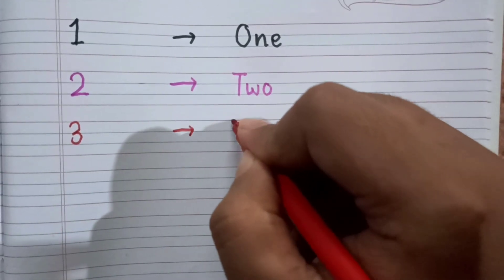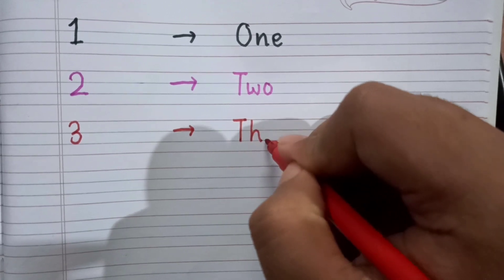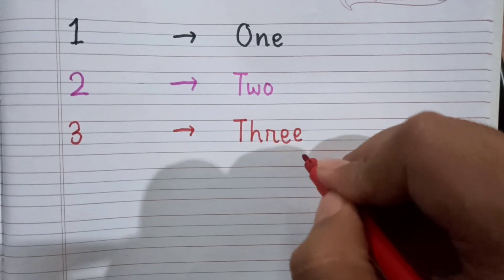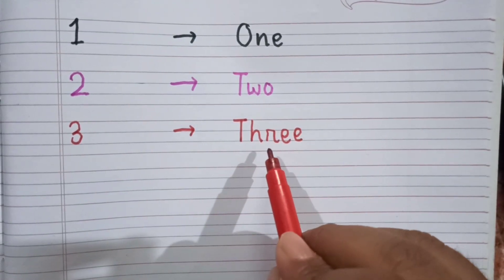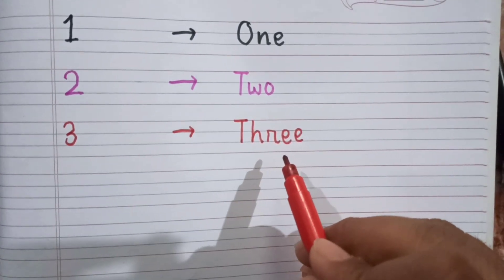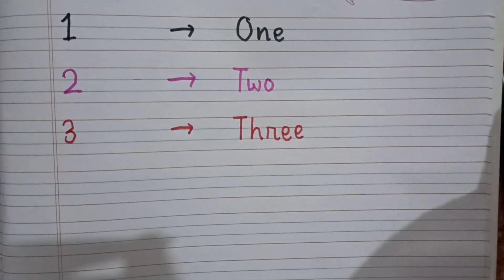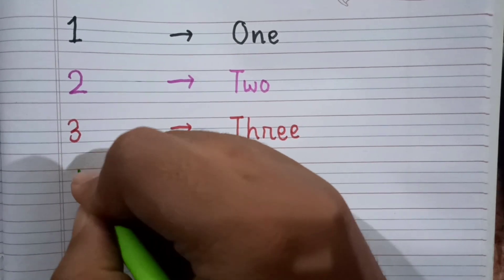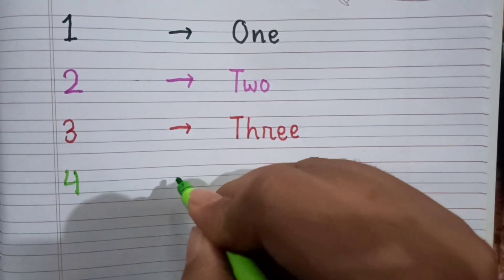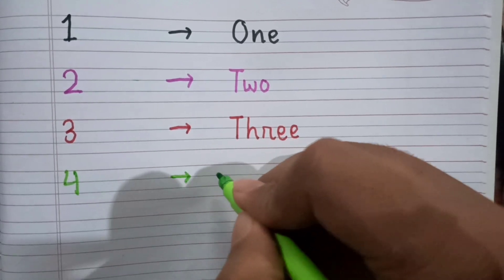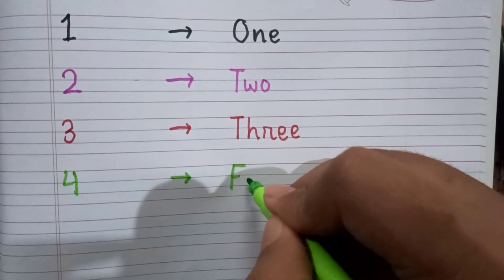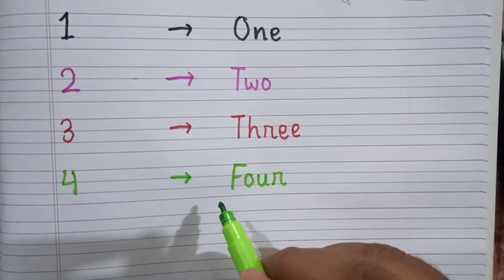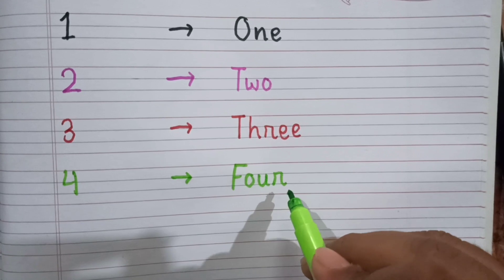Three. Okay, after three, the next number is four. This is four, and the spelling of four is F-O-U-R. Four.